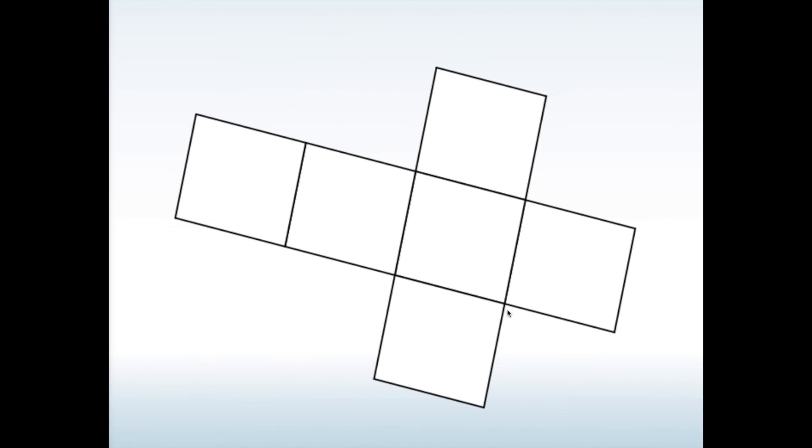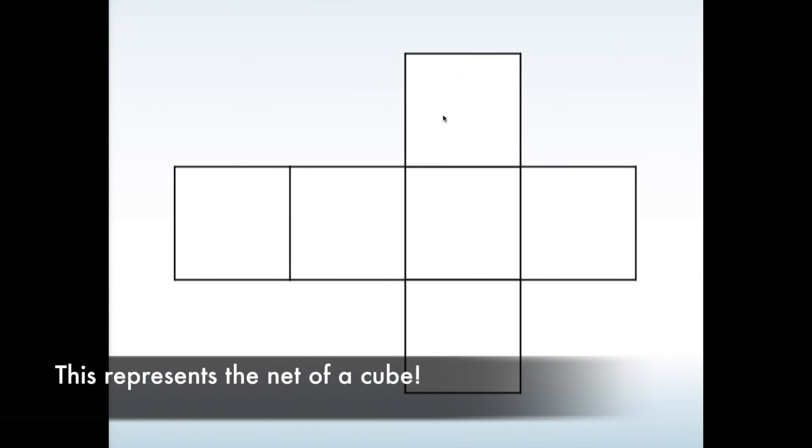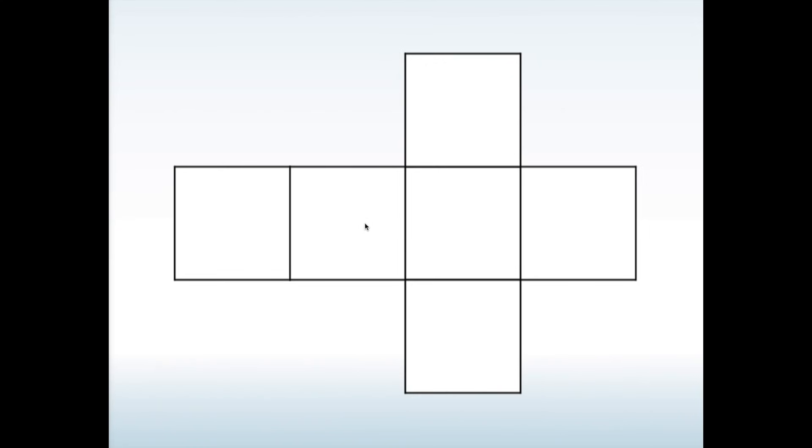As you can see it makes this object like this which consists of a bunch of 2D shapes combined. And this is actually one of 11 possible nets of a cube.